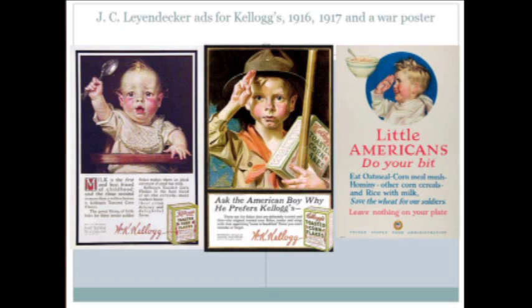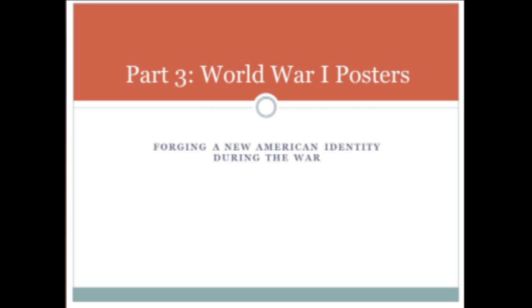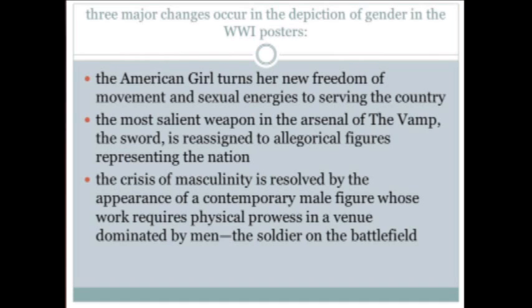Part three is forging a new American identity during the war. Three major changes occurred in the depiction of gender identity in the wartime posters that helped to re-establish a sense of stability. One: the flirtatious modern American girl turned her new energies and freedom to the altruistic purposes of serving the war effort. Two: the negative attributes of the dangerous woman — particularly swords — are turned into positive attributes of powerful, pro-social, allegorical females like Columbia and Liberty. And finally: the role of the soldier, requiring physical strength and fortitude for combat, provided a model of reinvigorated masculinity based on strenuous work that had been lost since the 1890s.